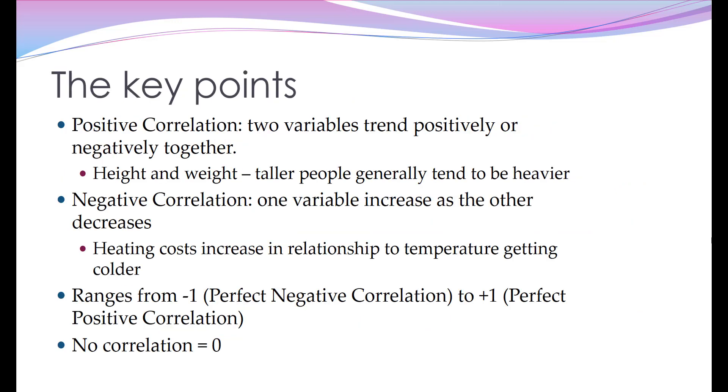So the key points really are that with correlation, you have positive correlation where two variables trend positively or negatively together. Basically that means height and weight - taller people generally tend to be heavier. So on a chart, if you imagine a graph where height's on the x-axis and weight's on the y, you would expect to see as one variable goes up, the other variable goes up as well.